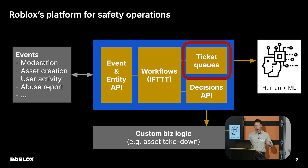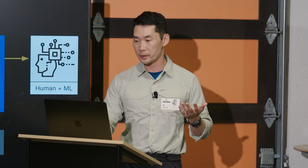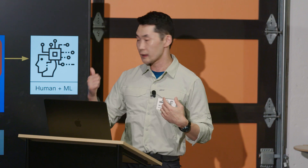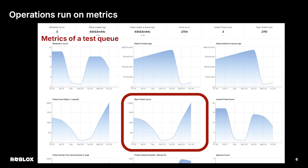This ops platform processes several million tickets per day, and the ticket queue is what I want to zoom in on next. Ops runs on metrics. Imagine you are a moderator lead — a supervisor with a bunch of moderators working for you. You want to see how they're doing, whether particular queues are overrunning, and rebalance and reassign people. We have SLOs on certain queues because creators depend on our approval decisions.